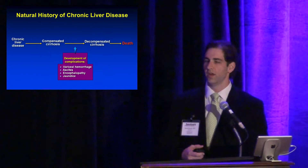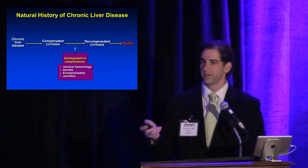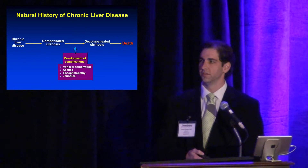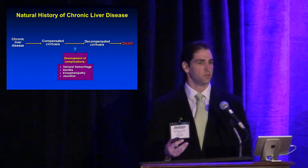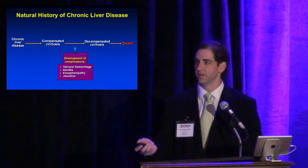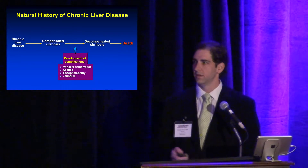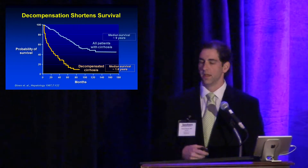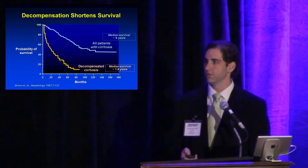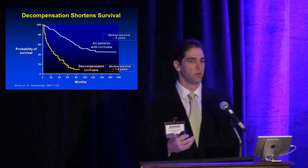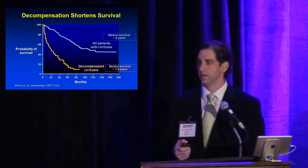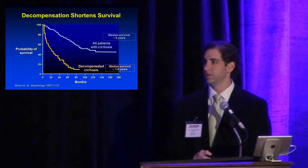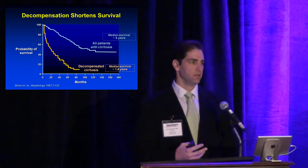Any form of chronic liver disease, left untreated, will progress to cirrhosis. Initially patients are in a compensated phase with no complications from portal hypertension or liver insufficiency. Over time, without intervention, they develop major complications: variceal bleeding, ascites, encephalopathy, and jaundice — classifying them as decompensated cirrhosis, which progresses to death or transplant. Compensated patients have a median survival of nine years, but once decompensated, median survival drops dramatically to about one and a half years.